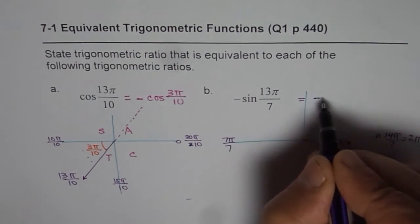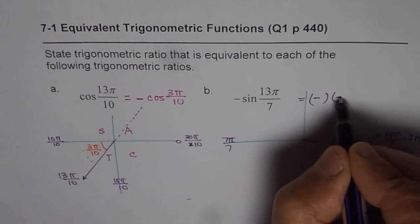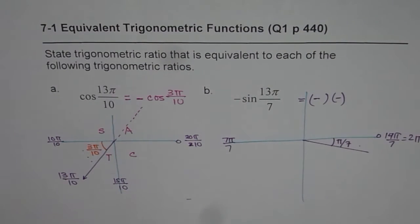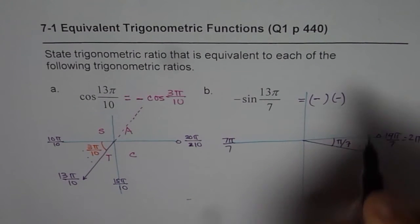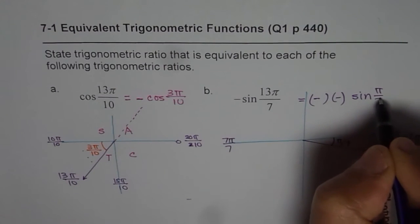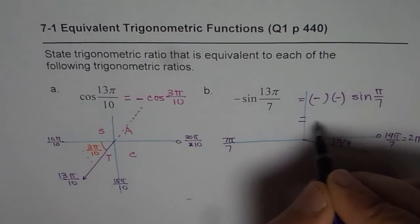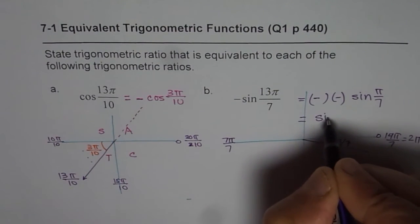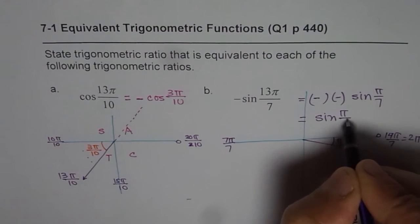But we already have a negative here. That means negative of negative, right? That means positive, correct? Negative of negative. And the acute angle is π by 7. So I can write this as 7 sin π by 7 in acute angle. So strictly speaking, I should be writing this as just sin π by 7.